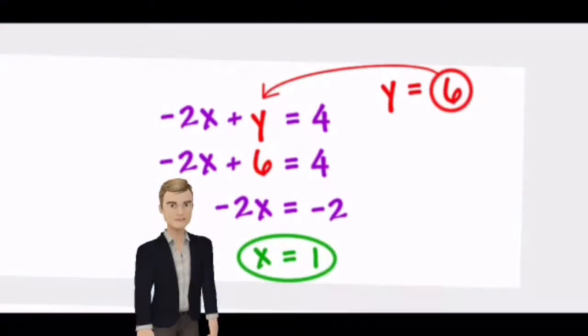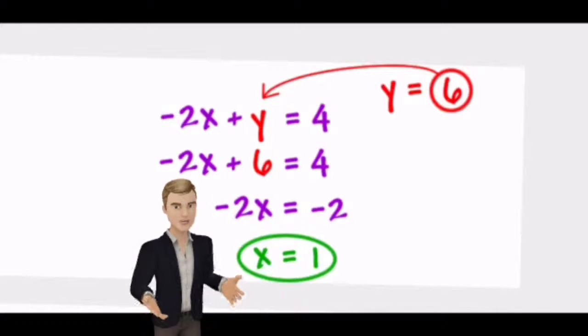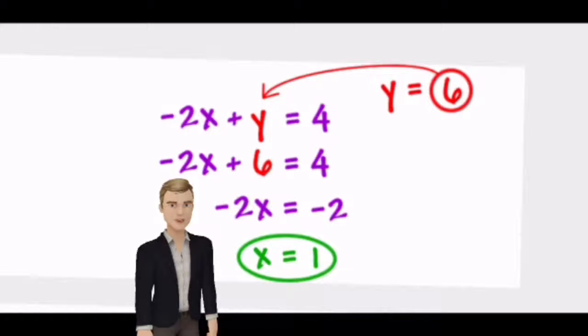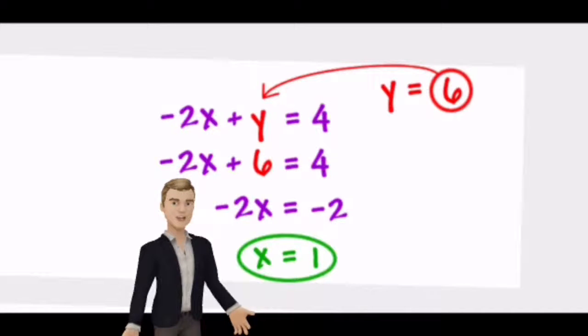Here is an example of a problem solved using the elimination method. In this problem, after 6 was plugged in for y, the solver subtracted 6 from 4, getting -2.